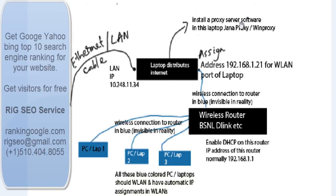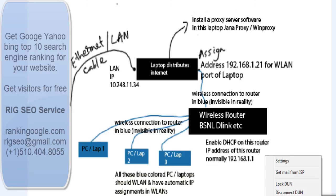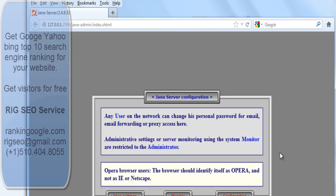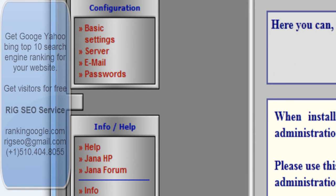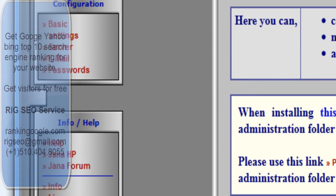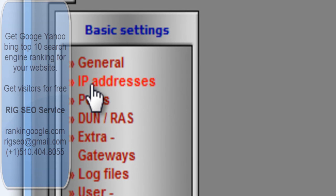You need to install a proxy server software on this laptop — this is JANA proxy or Win proxy, or any other proxy. I am showing you the JANA proxy settings here. Go to configuration, and in Firefox it opens the JANA proxy server. Go to Basic Settings, then IP Addresses.